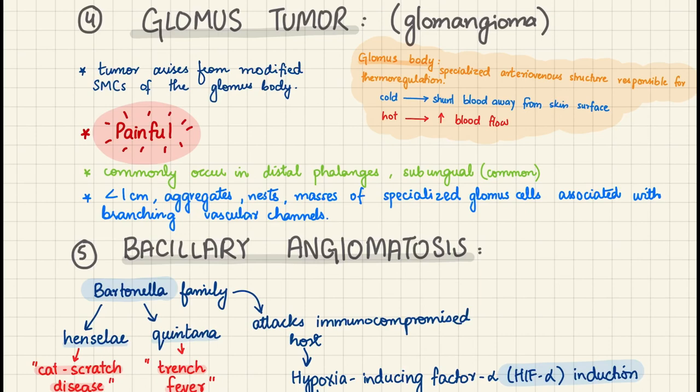Glomus tumor, or glomangioma, arises from the glomus body — a specialized arteriovenous structure with a direct shunt between an artery and a vein, covered by connective tissue. Glomus bodies are chiefly present in the distal phalanges and function in thermoregulation: in cold conditions they shunt blood away from the skin surface, and in hot conditions they increase blood flow to dissipate heat.